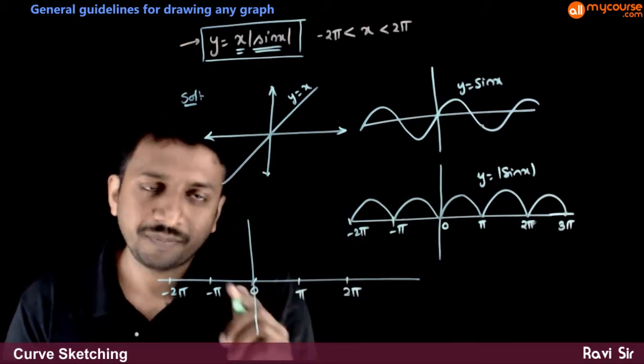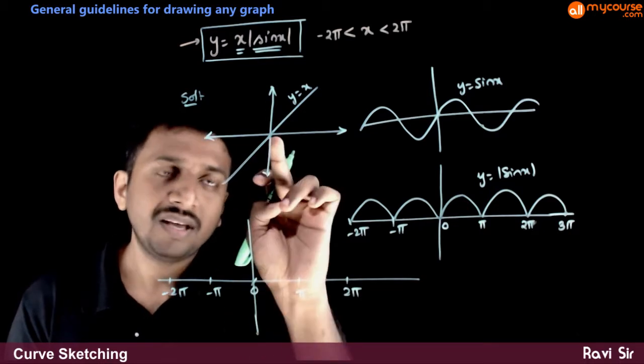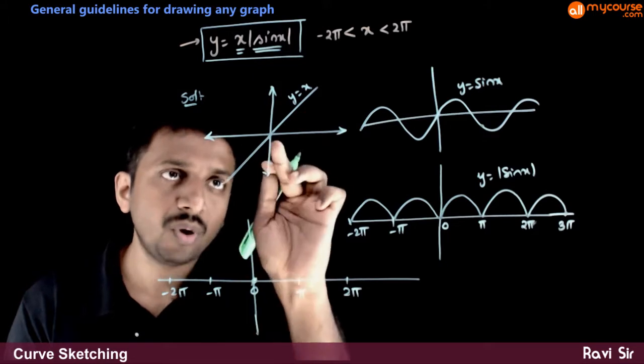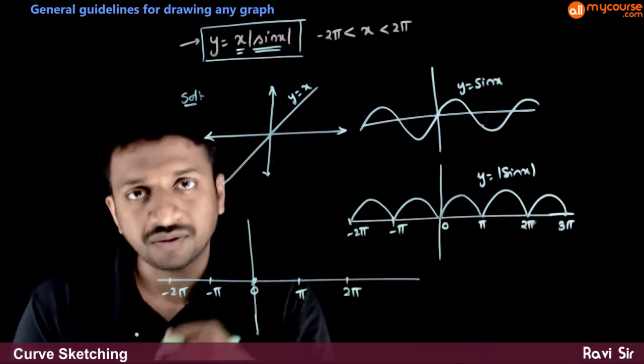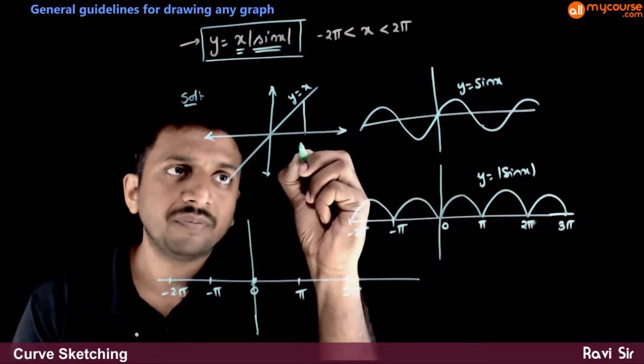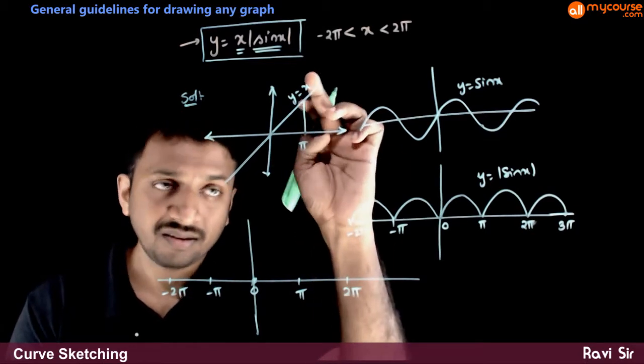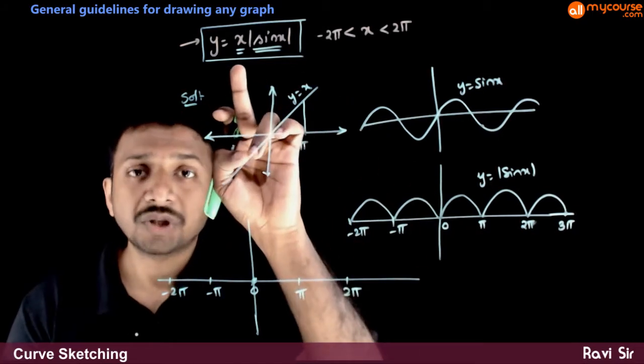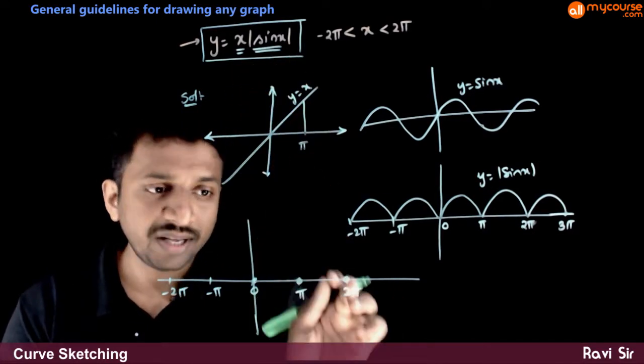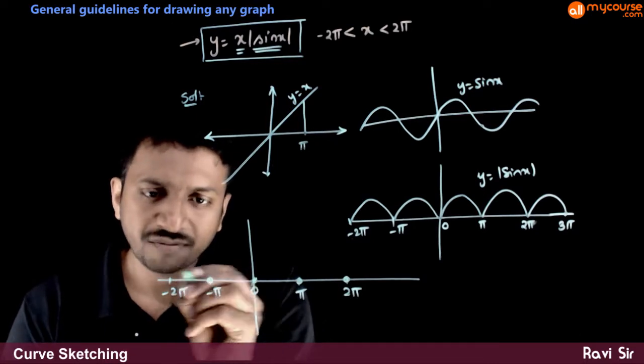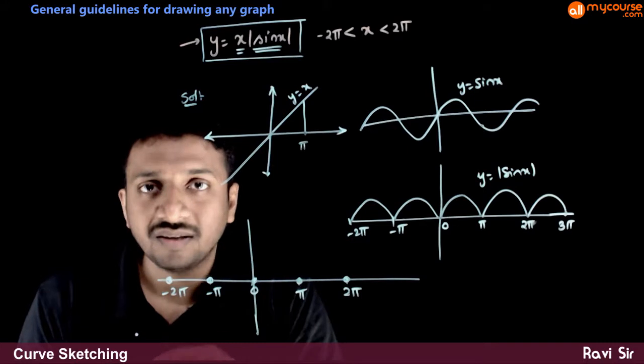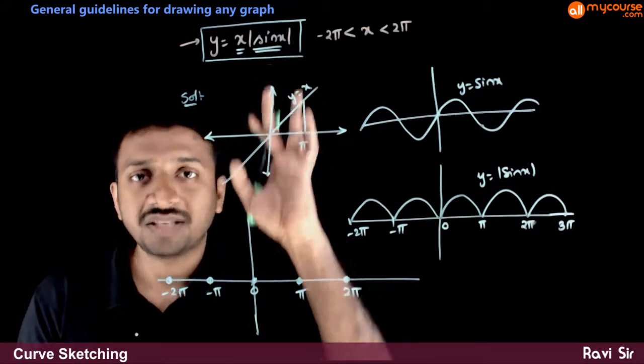Let us start from 0. At x equals 0, y equals, x equals 0 and sin x equals 0. So at x equals 0, both these graphs, y values are 0's. At x equals pi, sin pi is 0, so pi into 0 is 0. 2 pi also, sin 2 pi is 0, hence the function is 0. So at all these five points, the value of x mod sin x is 0.